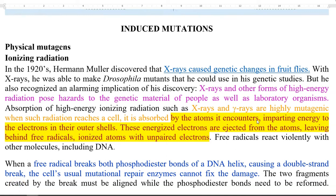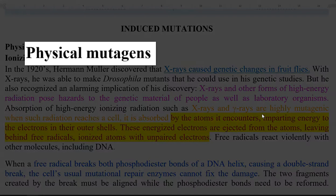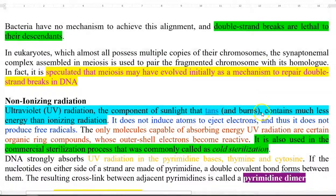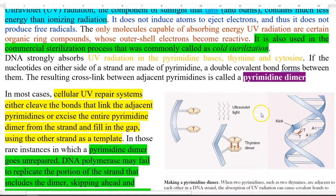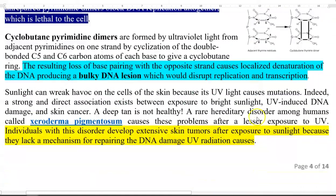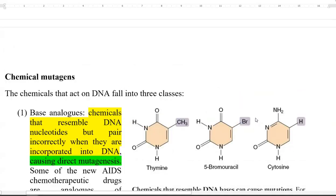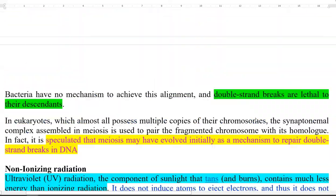In this screencast lecture, we are going to see about induced mutations. In the previous lecture, we saw how spontaneous mutations are created in organisms. Induction can be achieved by various agents such as physical mutagens, which include ionizing radiation and non-ionizing radiation, and even certain chemical agents can cause mutations. These are the various agents that can induce mutation.